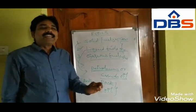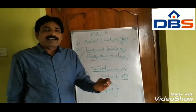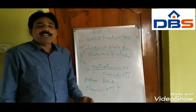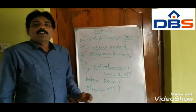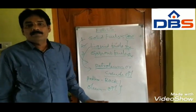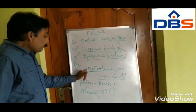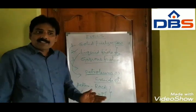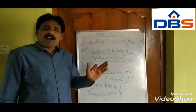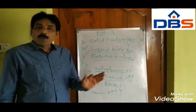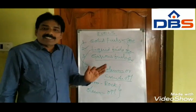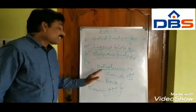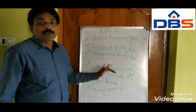Petroleum is a dark greenish-brown, high viscous liquid found from the earth's crust. That is called petroleum.